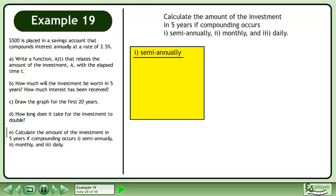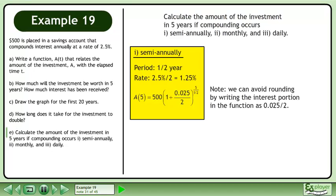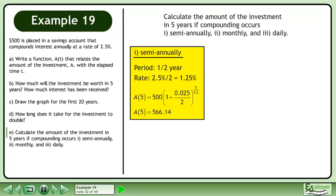We'll begin by calculating the amount compounded semi-annually. The period is half a year. There are two compounding periods so divide the interest rate by 2 to get 1.25%. Write this as a function. Note that we can avoid rounding by writing the interest portion in the function as 0.025 over 2. This returns an amount of $566.14.